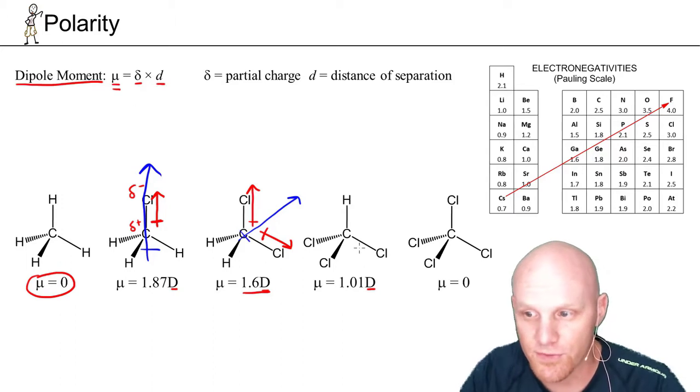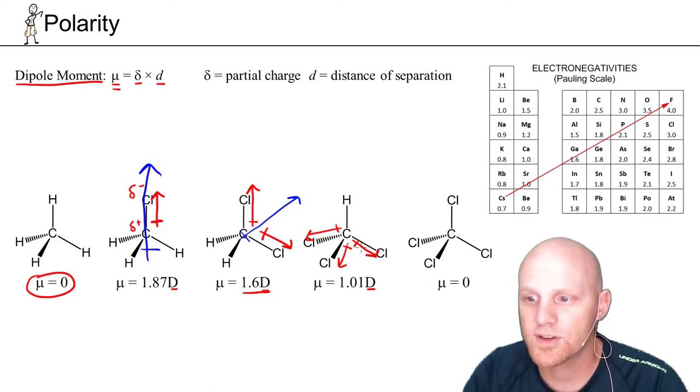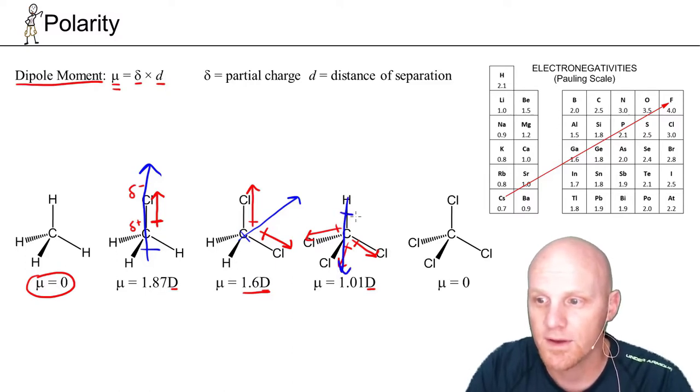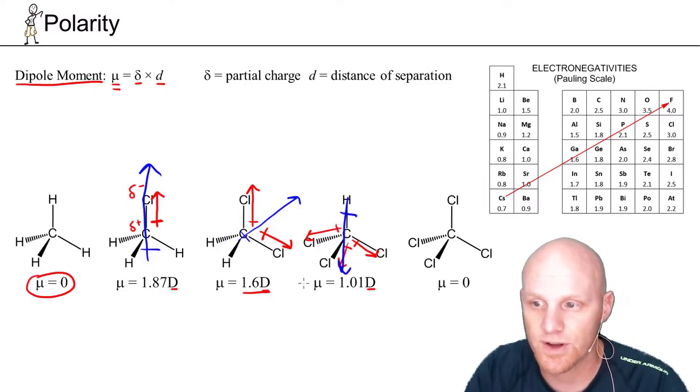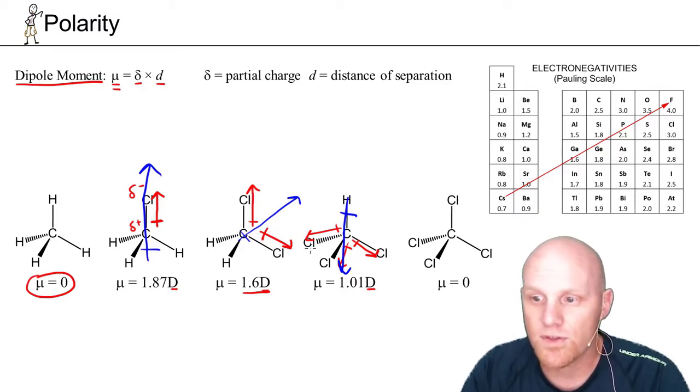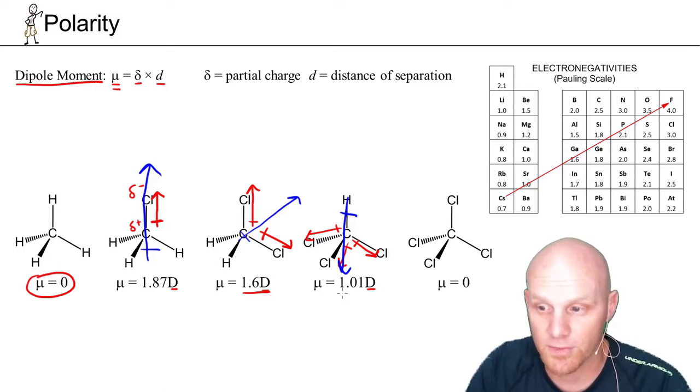And if we move on to trichloromethane, or chloroform as it's commonly called, we've got three polar bonds, three carbon-chlorine bonds, all 109.5 degrees apart. And in this case, they're all cancelling each other out to a degree, but they're all additive in some way, shape, or form as well. And if we look right down the middle of this molecule, right in between all of them, is the vector sum of those three, and that's the overall molecular dipole. So in this case, they're cancelling each other out more than they're adding, and that's why your molecule dipole moment here is even smaller at 1.01 debye.